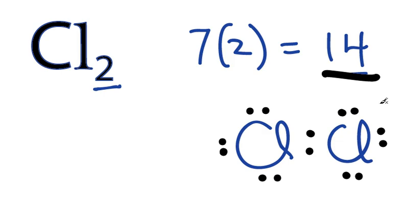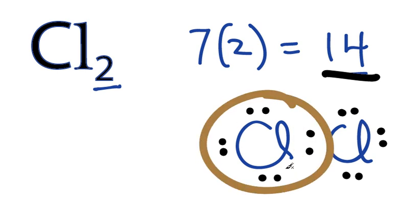Now let's see if we have octets, 8 valence electrons around each. That chlorine has 8, and this chlorine right here, 2, 4, 6, has 8 as well.